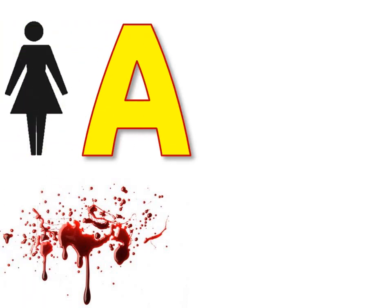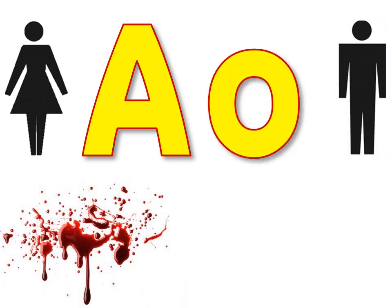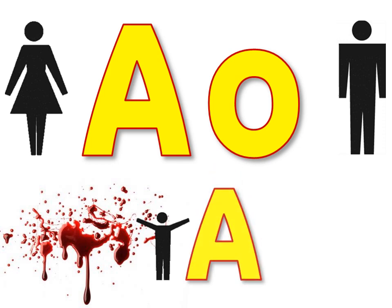Let's look at another example. Maybe your mom donates an A and your dad donates a lowercase o. Your genes would be big A, little o. Because the O is recessive, it doesn't show up. You would have blood type A.